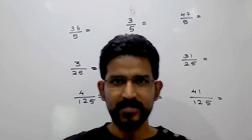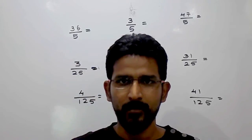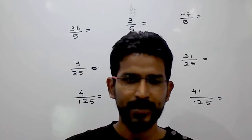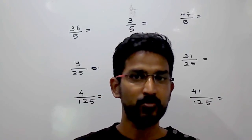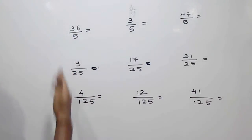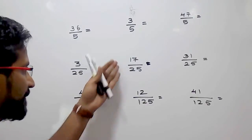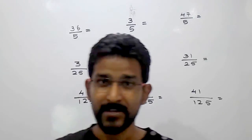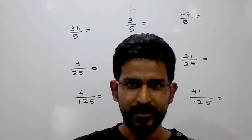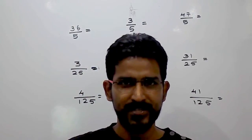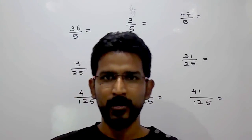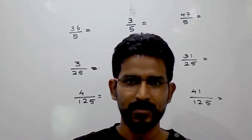Hello. Today in this session we are going to see one new trick by which you can divide any number by 5, 25, and 125 in just 2 seconds. It's very useful for school going students. Many times we get equations like 36 divided by 5, 70 divided by 25, or 12 divided by 125, and the normal method takes lots of time. Just follow this trick and you can get the answer in just 2 seconds.